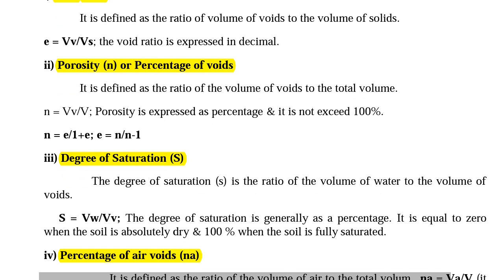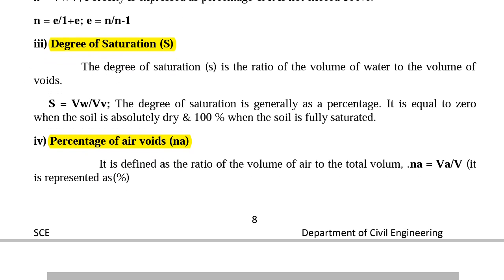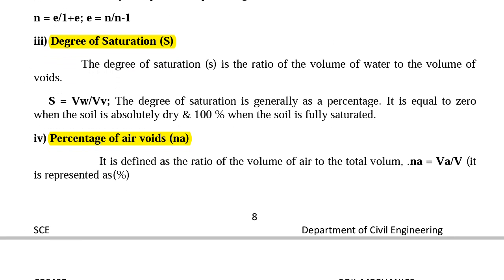Next we are going to see degree of saturation. Degree of saturation S is the ratio of volume of water to the volume of voids. The formula is S equal to Vw divided by Vv. Generally it is expressed in terms of percentage. Degree of saturation S is 0 for dry soil and S equal to 100% for fully saturated soil.